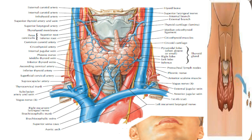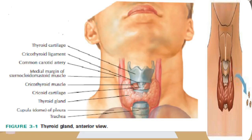The thyroid gland consists of two lobes and an isthmus. Between 30% and 60% of patients also have a pyramidal lobe that forms as a result of the persistence of the embryologic thyroglossal duct.